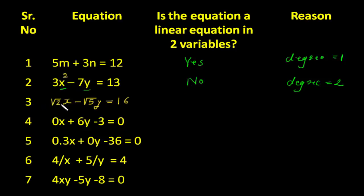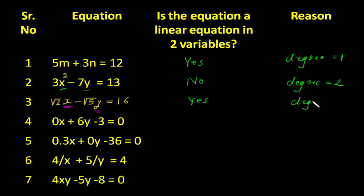In the third case: root 2x minus root 5y is equal to 16. If you see the variables x and y, the degree of x and y is 1, so automatically the answer for this is yes. The reason is the degree is equal to 1.